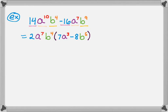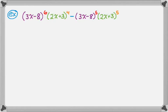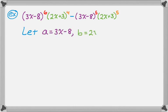Let's move on to something that looks more complicated but really isn't. We've got the quantity 3x minus 8 to the 6th times the quantity 2x plus 3 to the 4th, minus the quantity 3x minus 8 to the 5th times the quantity 2x plus 3 to the 5th. We really have just two types of things: 3x minus 8's and 2x plus 3's. To simplify, let a equal 3x minus 8 and b equal 2x plus 3. Rewriting, we get a to the 6th times b to the 4th minus a to the 5th times b to the 5th — this looks a lot like the last problem.